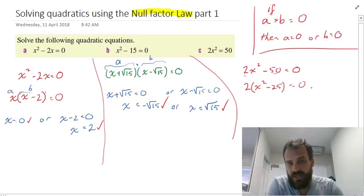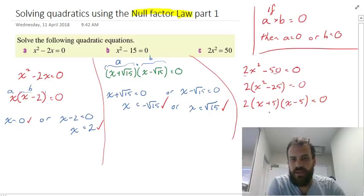We can see this is x² - 25. That's a really neat difference of two squares. 2(x + 5)(x - 5) = 0. Now, if that's the case, 2 times something times something equals zero.